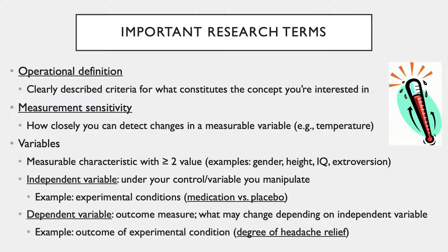The impact of an argument or research findings diminishes if there's no clear operational definition. For example, if you wanted to study successful women who are paid high salaries, how would you define 'successful'? And what constitutes a high salary? Unclear definitions lead to problems with vagueness and ambiguity, which we discussed in the thought and language lecture.